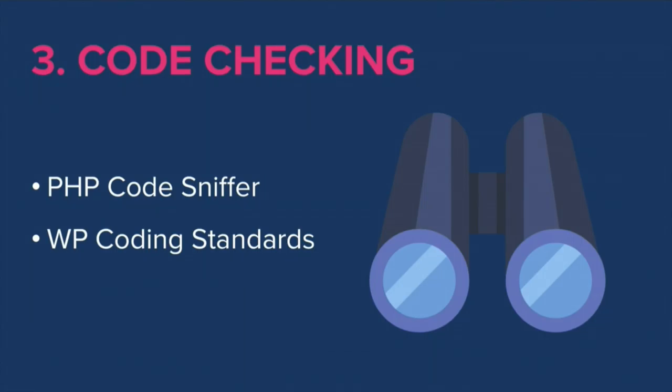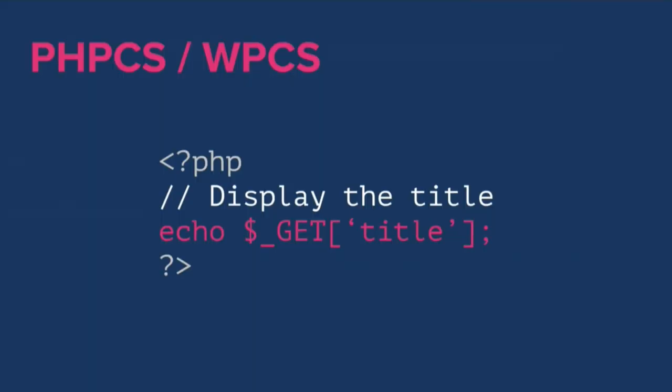The third component is code checking — making sure code follows standards and is secure. The two tools I use are PHP CodeSniffer and WordPress Coding Standards, which is a ruleset for PHP CodeSniffer. When I was a young developer I actually committed an insecure line of code to the MobilePress plugin and quickly learned my lesson from the WordPress community. If I had been using PHPCS with WordPress Coding Standards, that insecure code would never have reached production because it would have warned me about it.